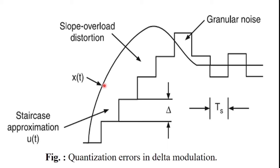To explain slope overload distortion again: it occurs because of the large dynamic range of the input signal. The rate of rise of the input signal is so high that the staircase signal cannot approximate it. The step size delta becomes too small for the staircase signal u(t) to follow the step segment of the input signal x(t).